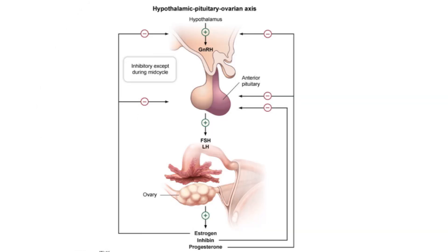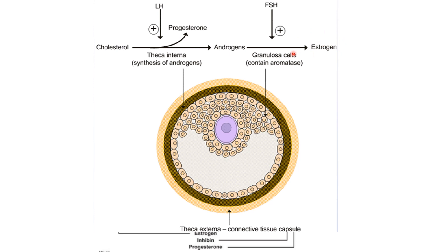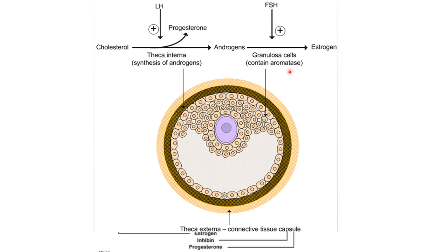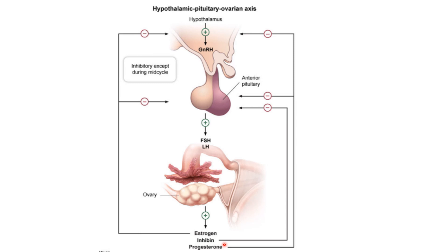It all starts at the level of the hypothalamus. The hypothalamus secretes GnRH in a pulsatile manner, and this GnRH stimulates the anterior pituitary to produce gonadotropins — FSH and LH. These gonadotropins stimulate the ovary to produce estrogen and progesterone, which finally build the uterus. So the more LH and FSH we have, the more estrogen and progesterone, because they act at specific steps in hormone synthesis.